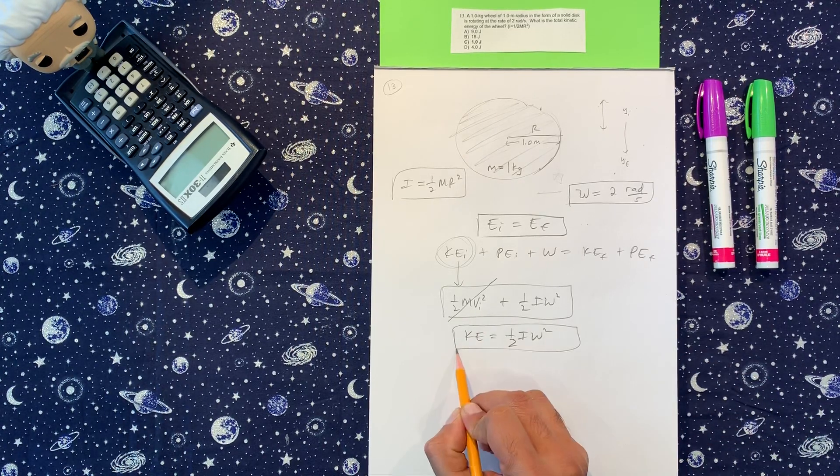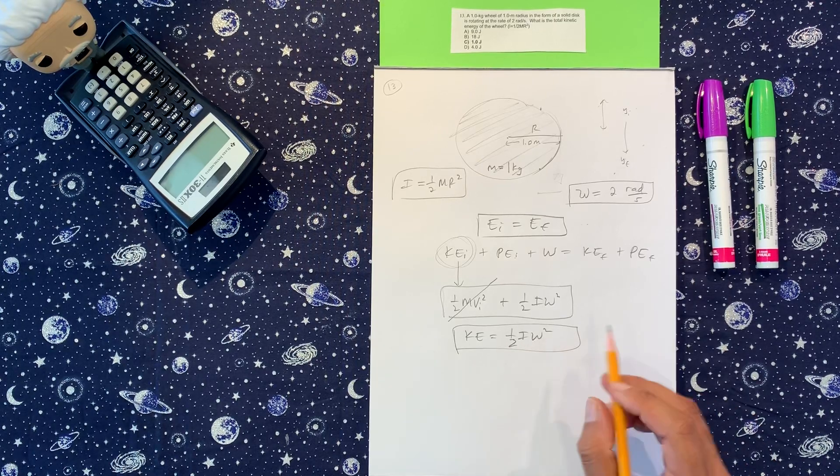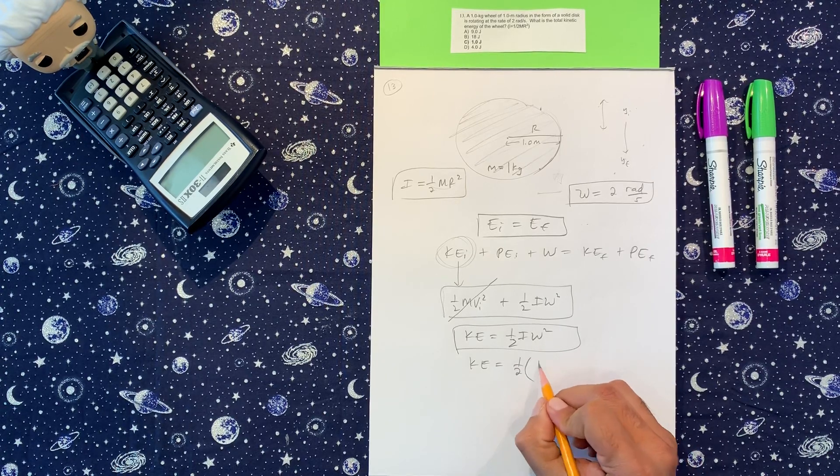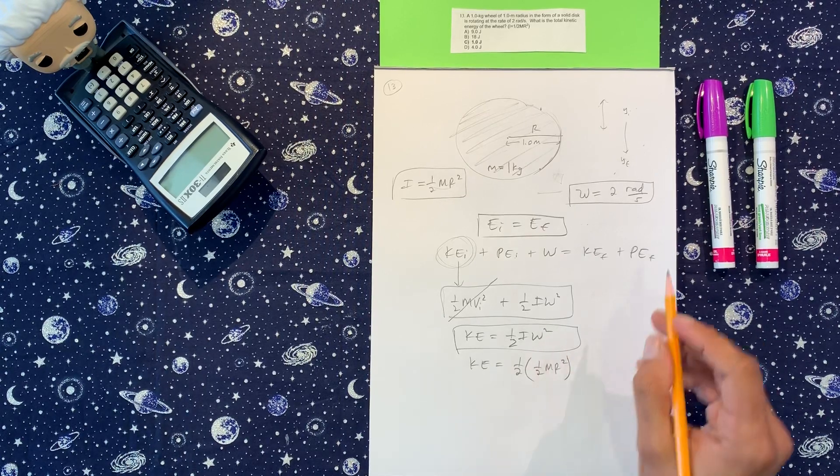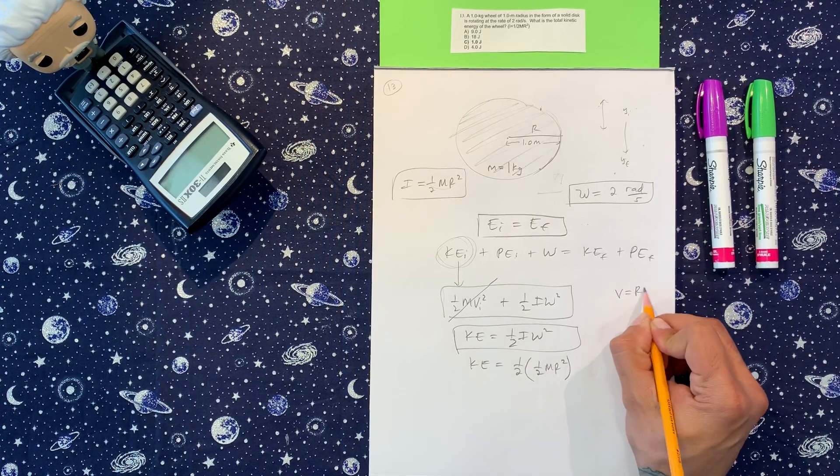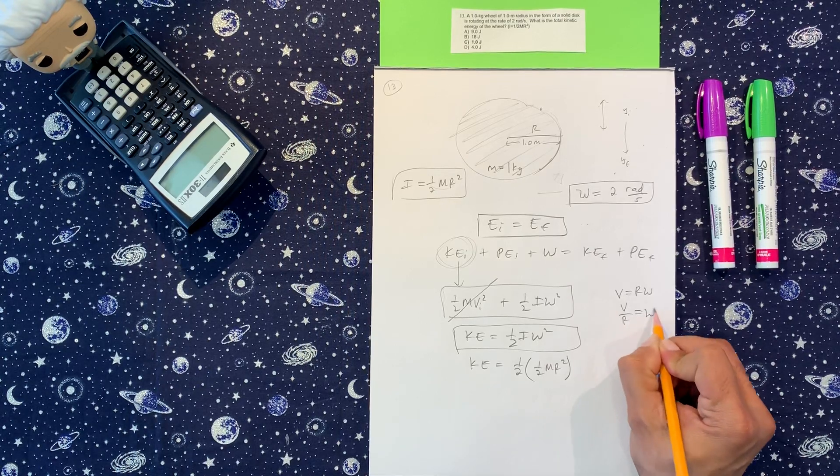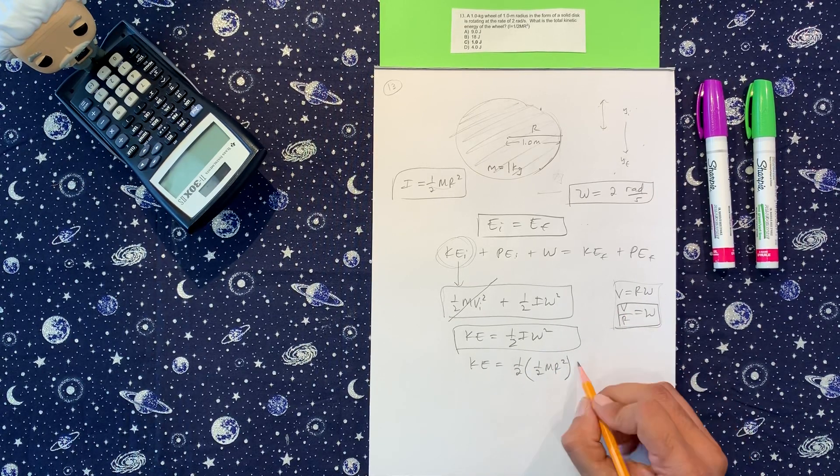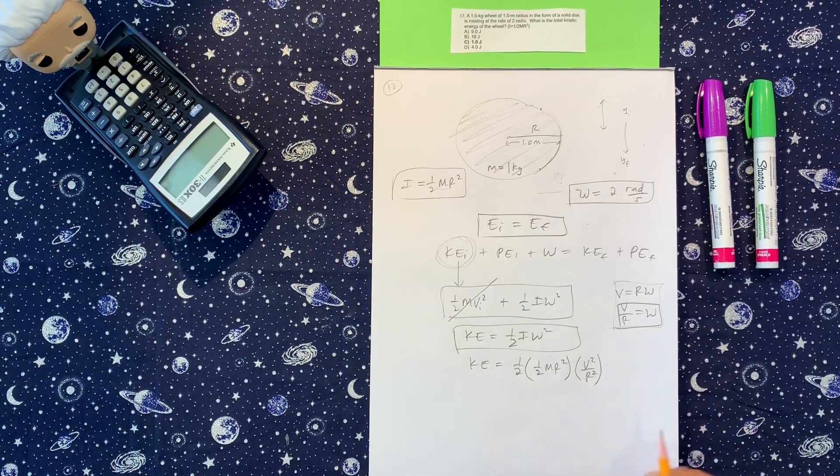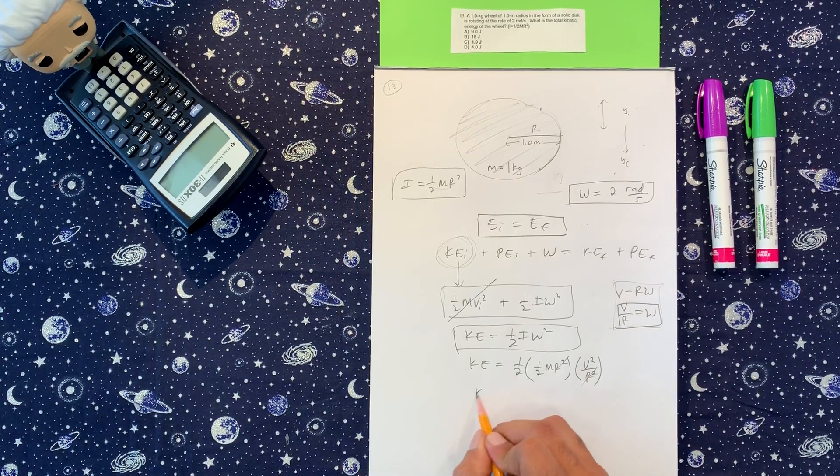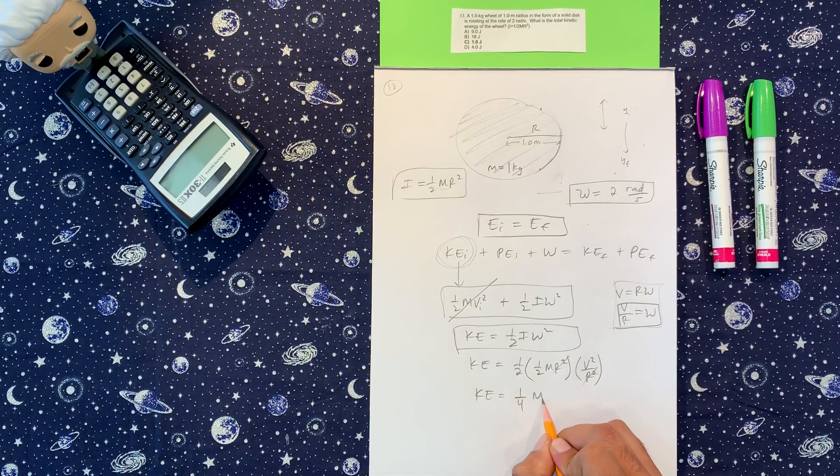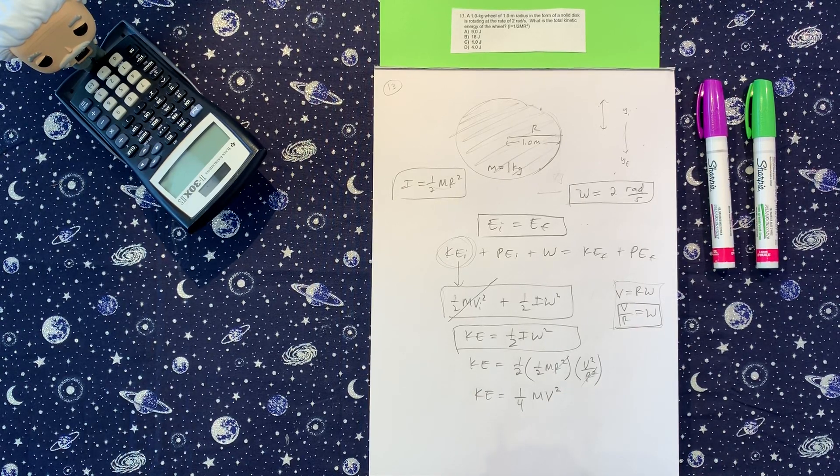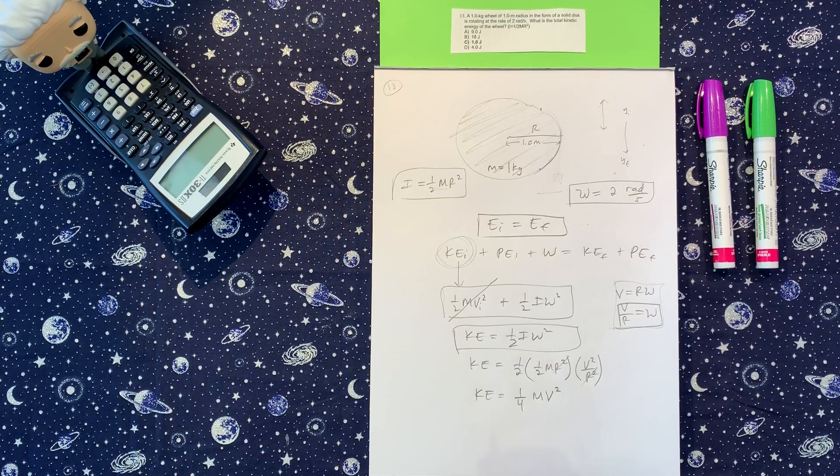So once you get to this part, then we know how to deal with this. I am going to replace with this stuff here. So kinetic energy, one half. The I is going to be one half m r squared. The omega, we know, is velocity equals r omega. Velocity over r equals omega. So we know this. So we're going to replace this omega with v over r. V squared, r squared. The r's cancel, and we have kinetic energy equals one fourth, the mass of the disc and the velocity that the angular velocity that was given to us.